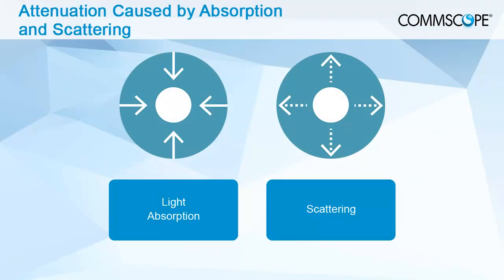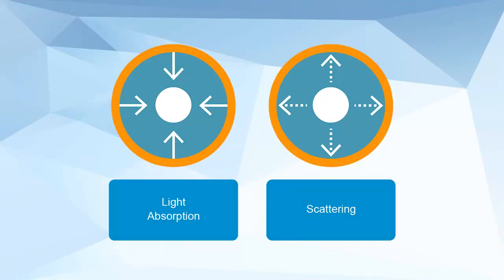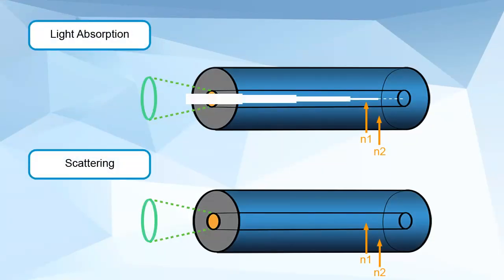The two main loss mechanisms of light transmission in optical fiber are light absorption and scattering. With light absorption, light is absorbed in the fiber material as its energy is converted to heat due to molecular resonance and wavelength impurities. For example, hydrogen and hydroxide resonance occurs at approximately 1244 and 1383 nanometers.